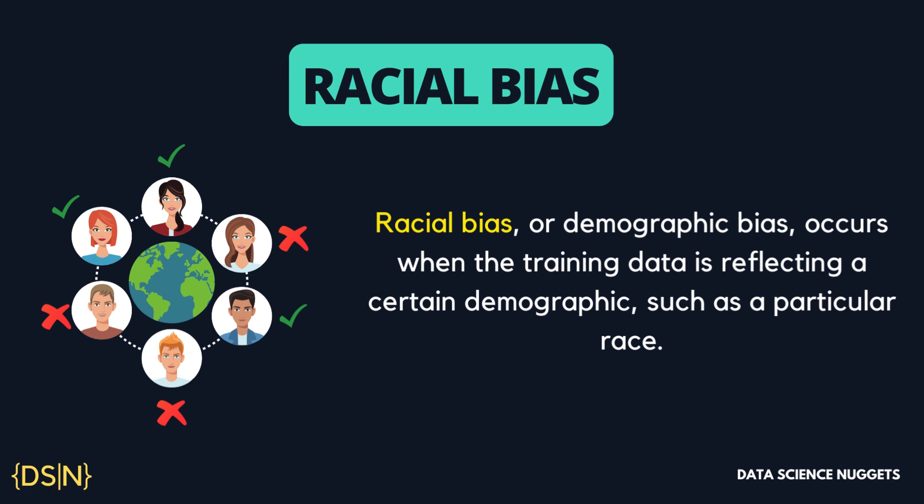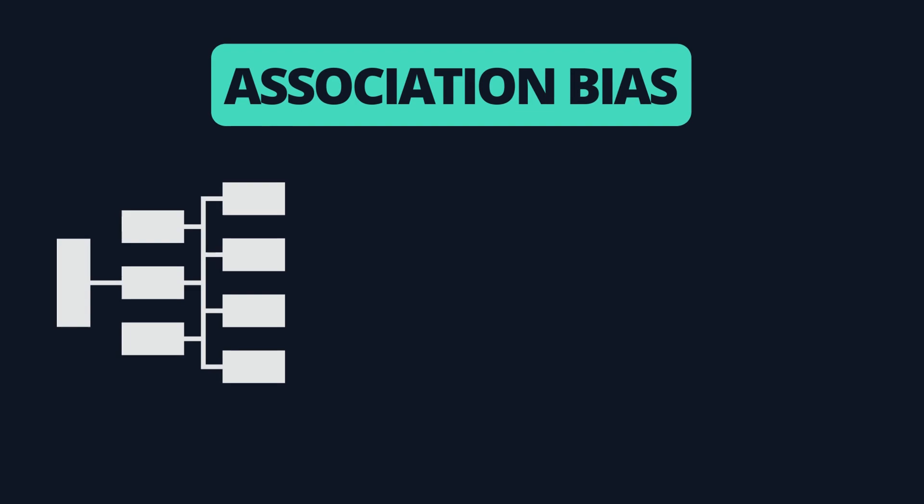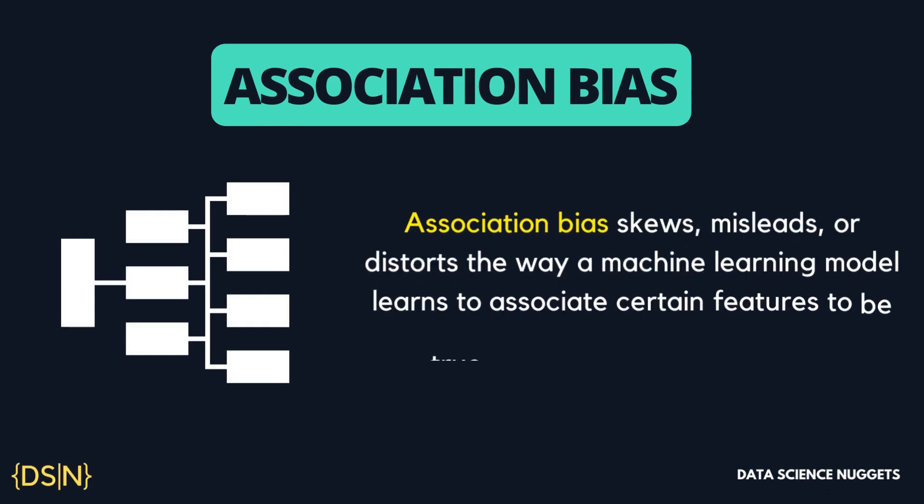Next is association bias. Association bias skews or distorts the way a machine learning model learns to associate certain features as true based on the training data, essentially reinforcing a cultural bias if the data was not collected thoughtfully. For example, if the training dataset labels all pilots as men and all flight attendants as women, the model will not recognize female pilots or male flight attendants, hence creating association bias.